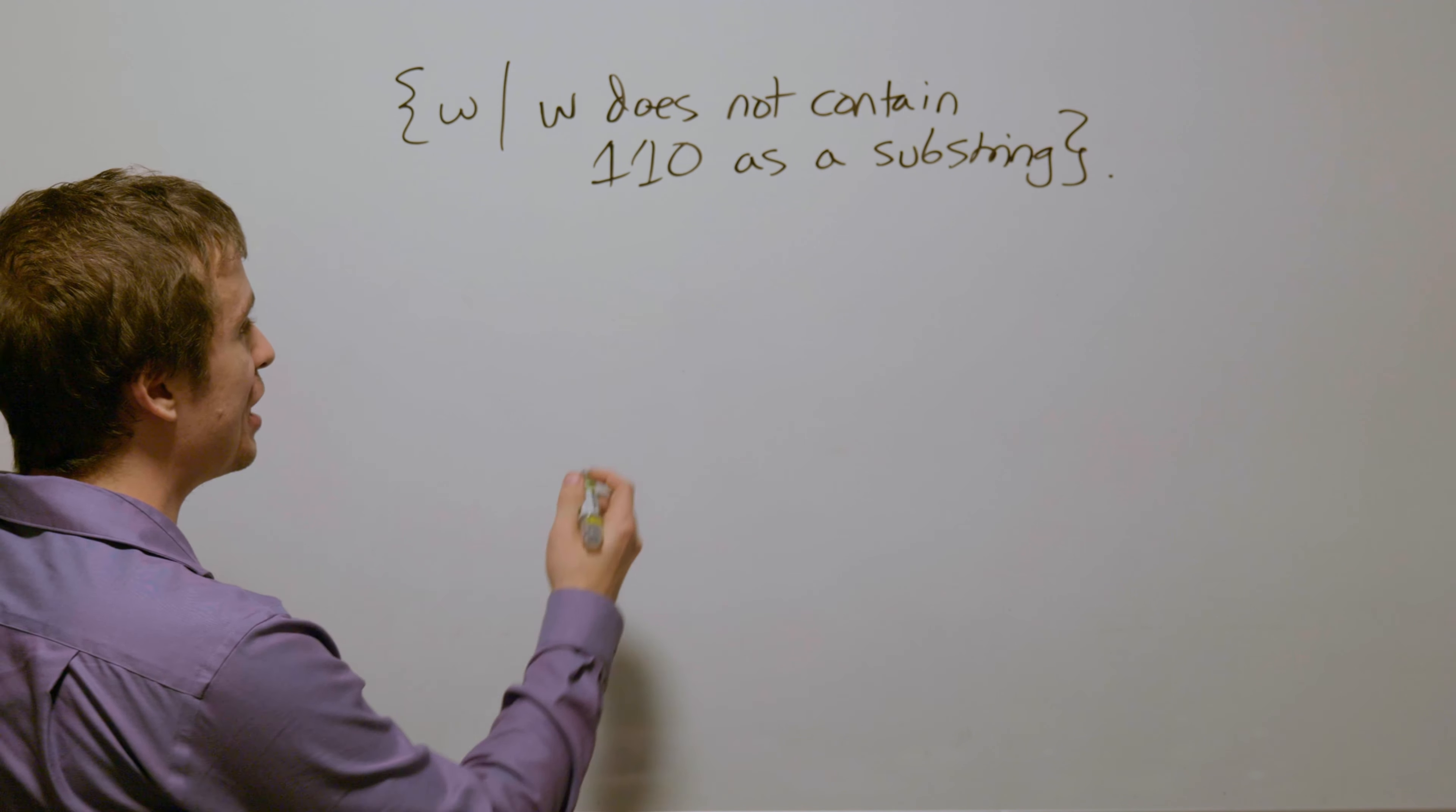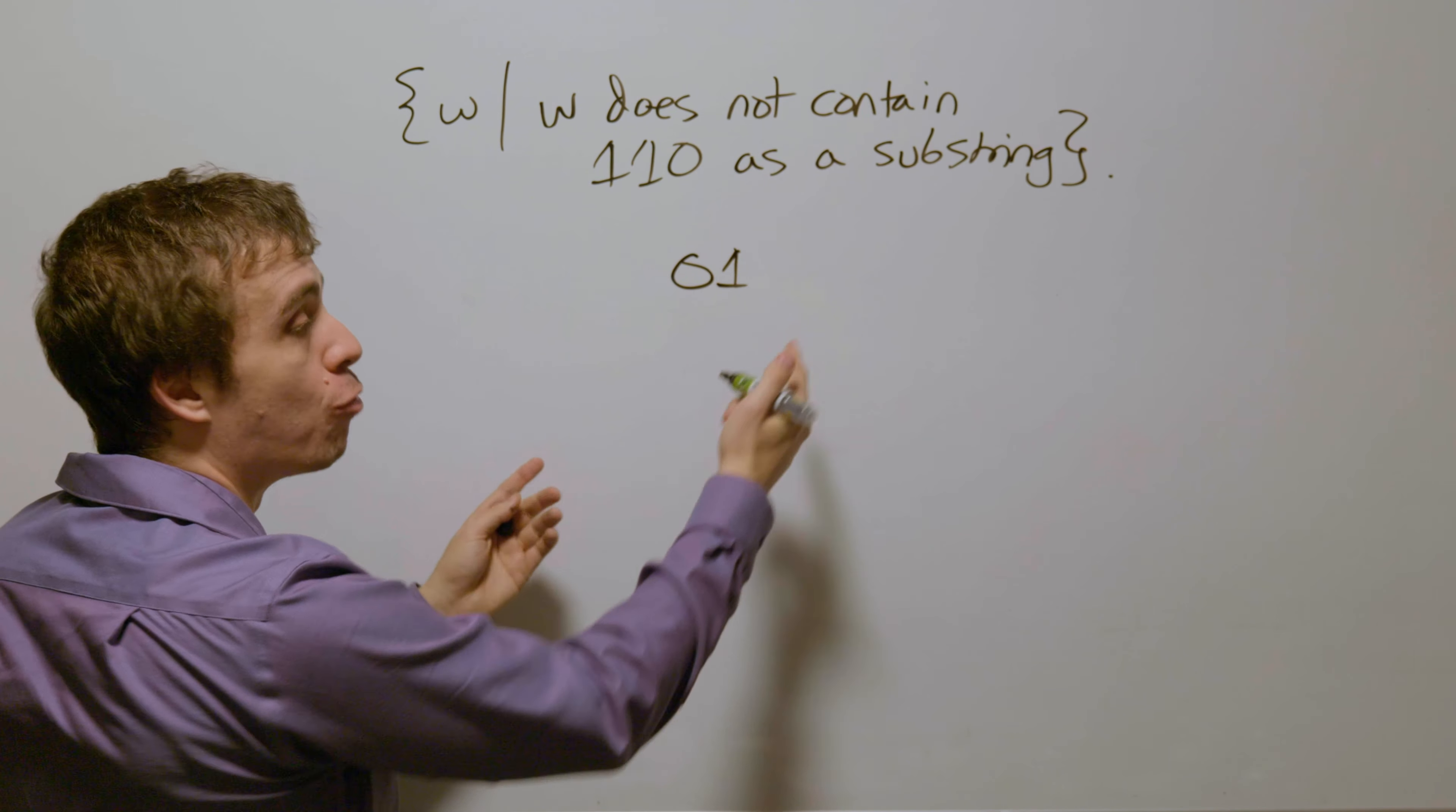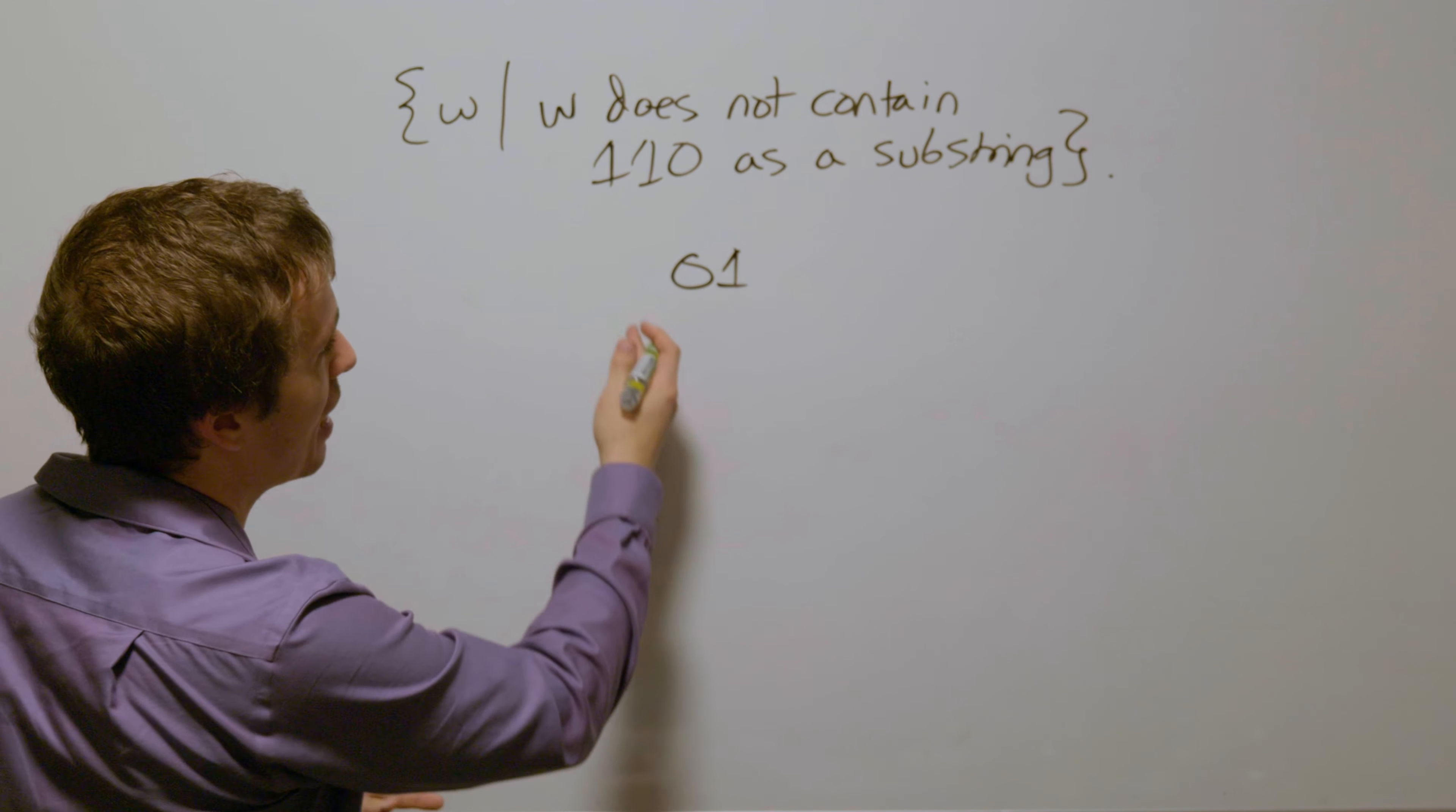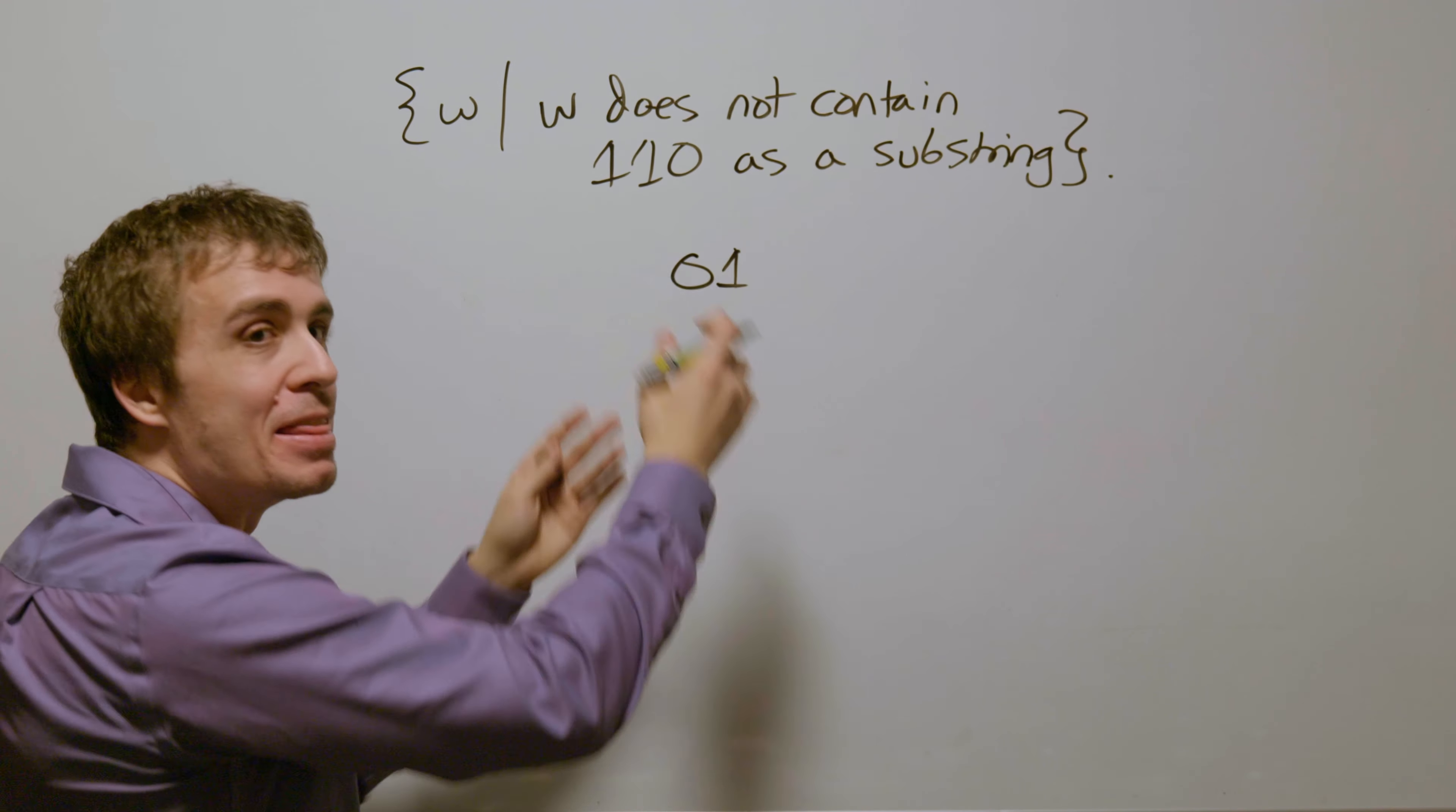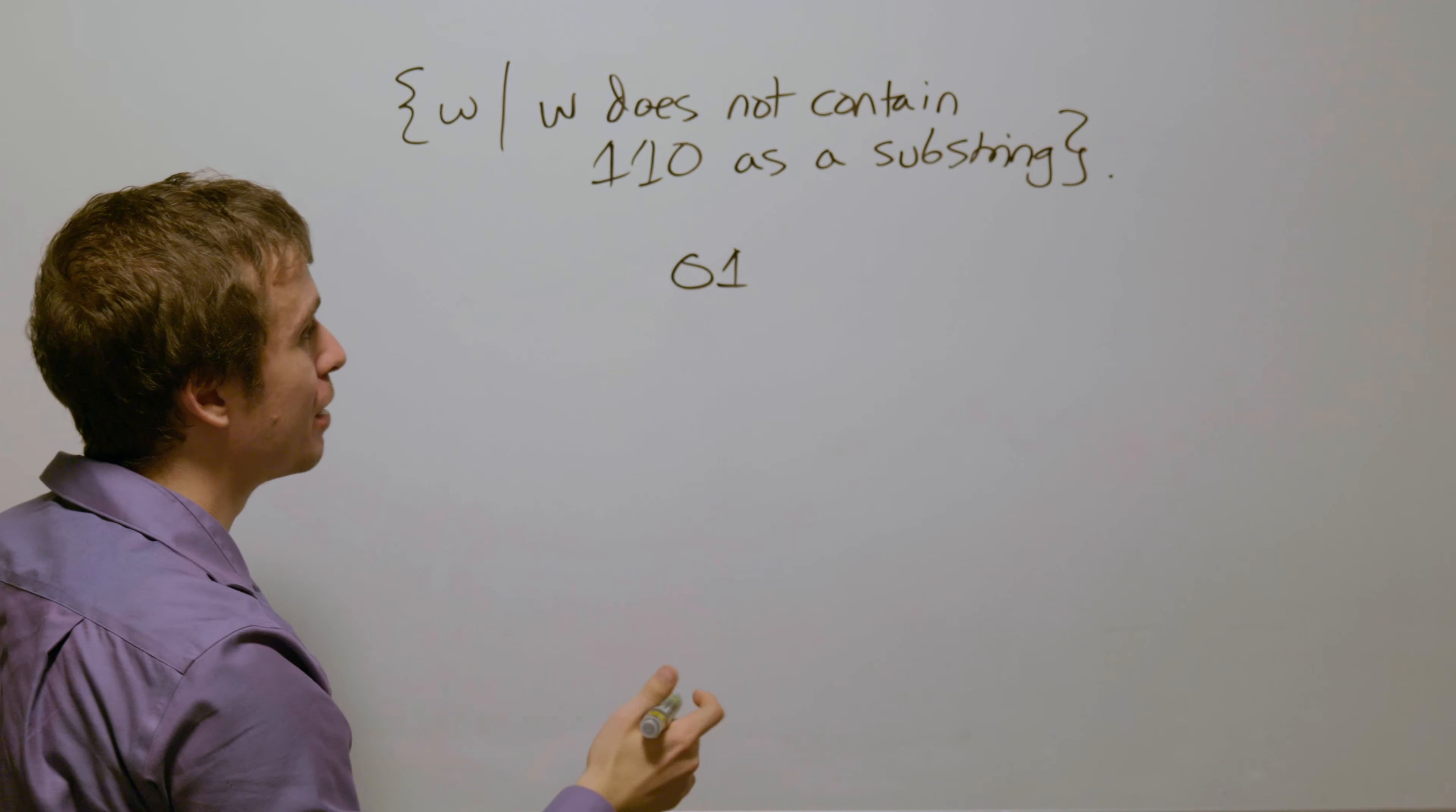So as an example, if we have 01, that does not have 110 as a substring because it has shorter length than the thing it's supposed to contain, so it clearly doesn't.